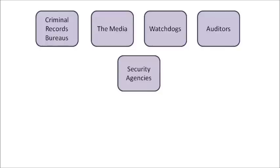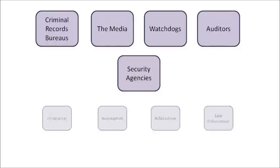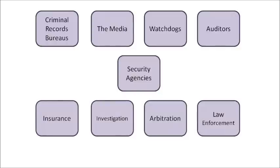We cannot know in advance how the security and arbitration firms will be structured. We cannot know how many firms will operate in a given area, or how large an area a typical firm will cover. Free market competition is needed in order to know whether all these functions will be provided in-house, or whether some would be outsourced or provided by distinct firms. All these related industries keep the firms satisfying consumer demands for security and law — true to their function of protecting individuals against aggression, serving justice, and maintaining order in society.